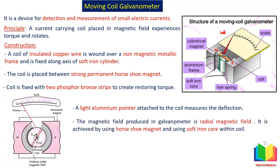The magnetic field produced in the galvanometer is a radial magnetic field. This is very important — the magnetic field you see here is a special kind of magnetic field. The magnetic lines of force go radially outward and inward from the poles.